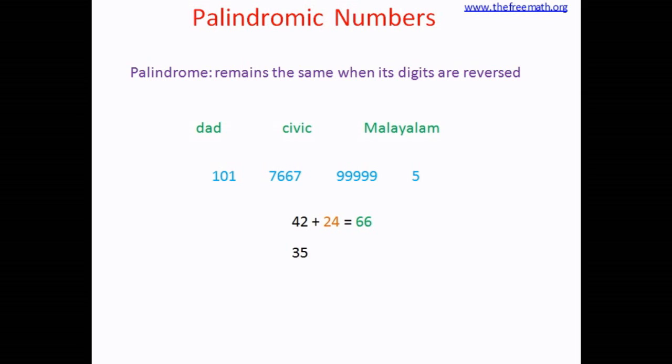Let's take another example 35. Now you reverse it, you flip it. So you get 53. Add these two numbers, that is add 35 and 53, and the sum is 88 which is a palindrome.